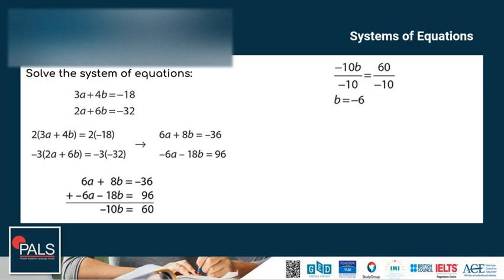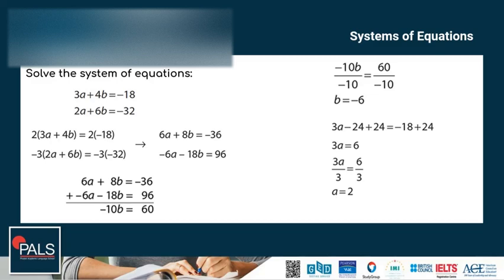Dividing both sides by negative 10 gives b equals negative 6. Then substituting negative 6 for b in the first equation gives me 3a plus 4 times negative 6, which is negative 24. Undoing the negative 24 by adding 24 gives 3a is equal to 6. Dividing both sides by 3, a is equal to 2. So the solution to the system of equations is a equals 2 and b equals negative 6.